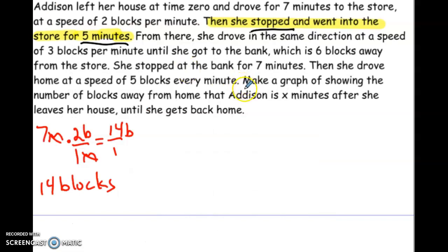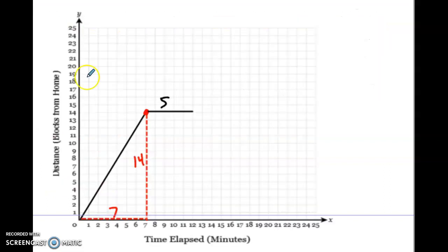Now, then she stopped and went to the store for five minutes. She's not going away or coming closer — she just stopped. That would look like this: we go over and count five minutes this way, keeping a flat horizontal line.